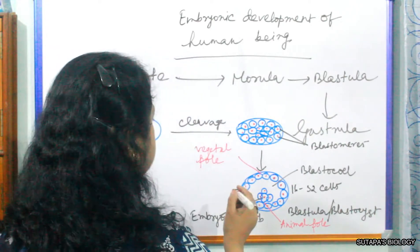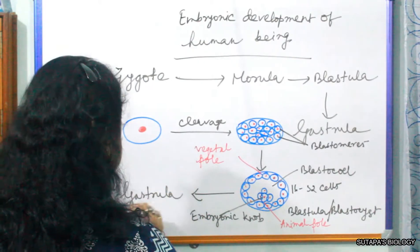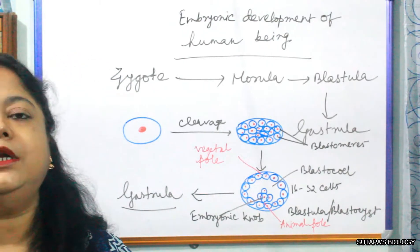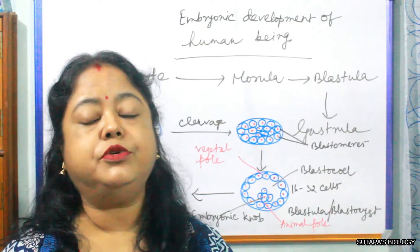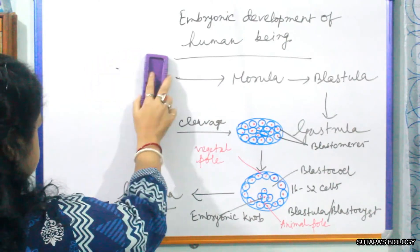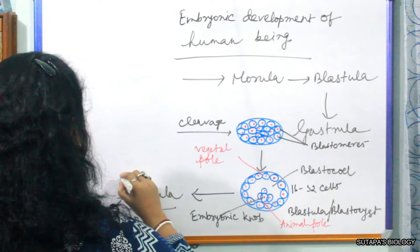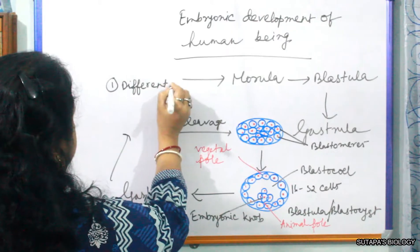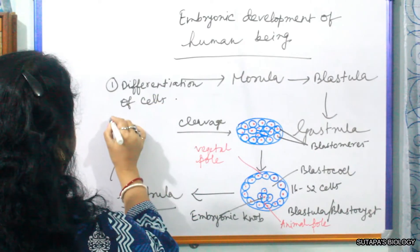Next is gastrula. When the division of cleavage is completely stopped, gastrulation begins. In gastrula, we shall get two stages: number one is formation of germinal layers, or we can say differentiation of cells, and number two is morphogenetic movement. So gastrula is characterized by these two things.